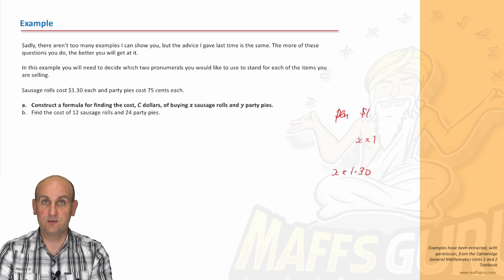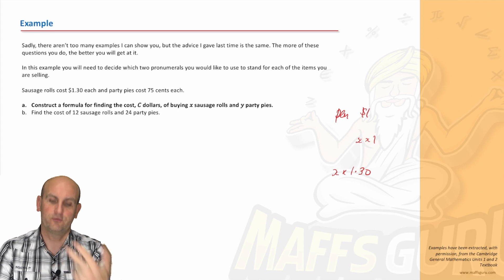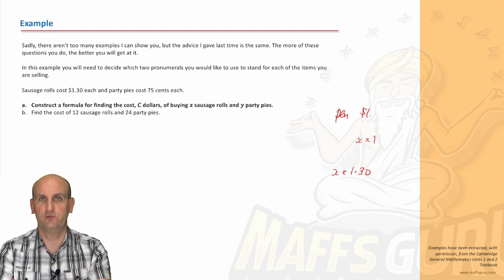Again, if I had one sausage roll, it would be $1.30. If I had two sausage rolls, two times $1.30. Three sausage rolls, three times $1.30. X just replaces the number I'm doing.